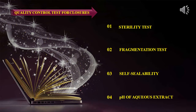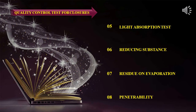There are 8 tests for closures. The quality control tests for closures are: sterility test, fragmentation test, self-sealability, pH of aqueous extract, light absorption test, reducing substances test, residue on evaporation, and penetrability.